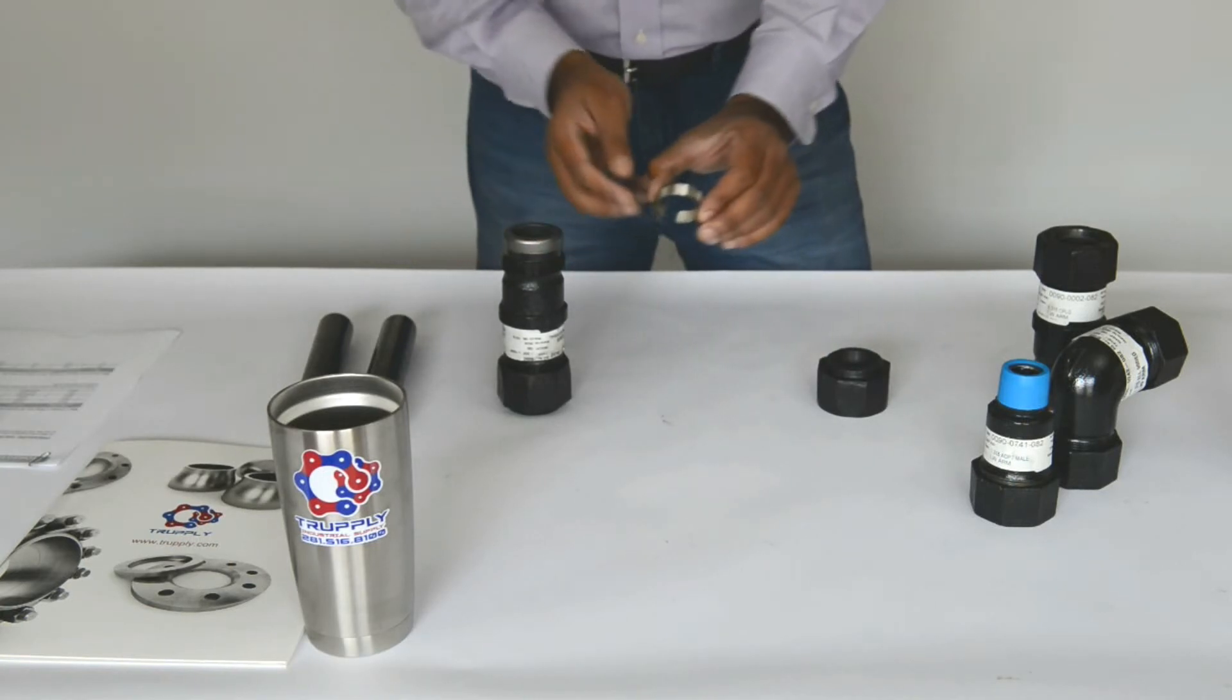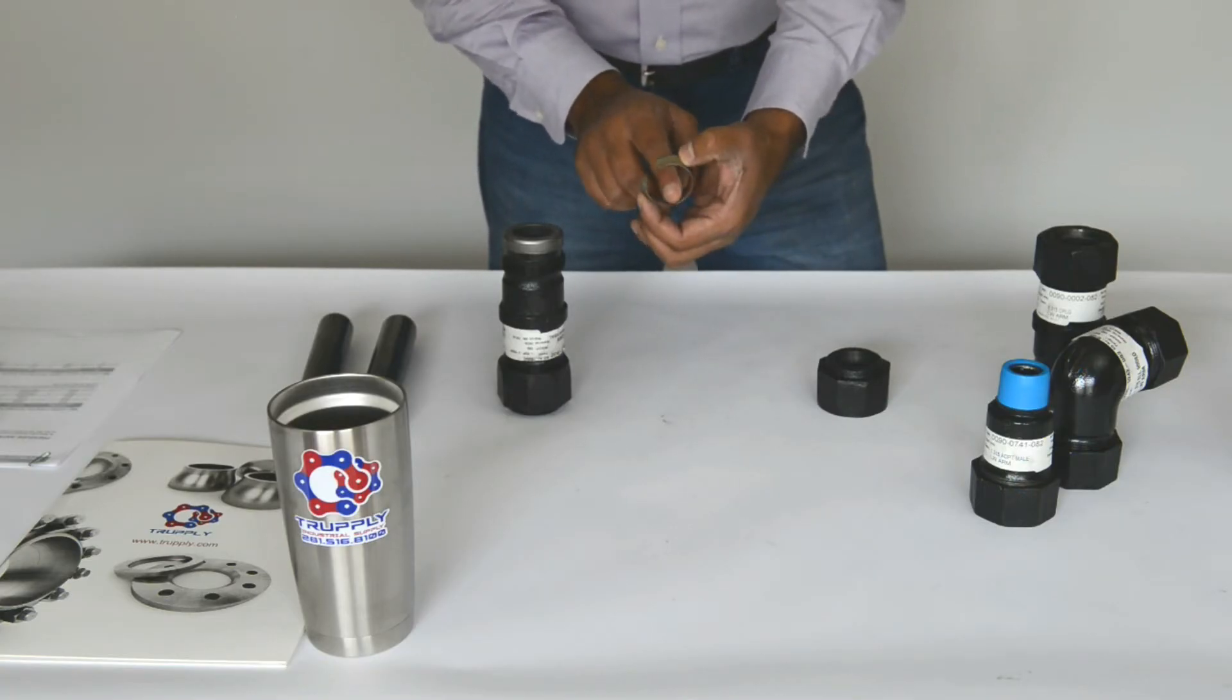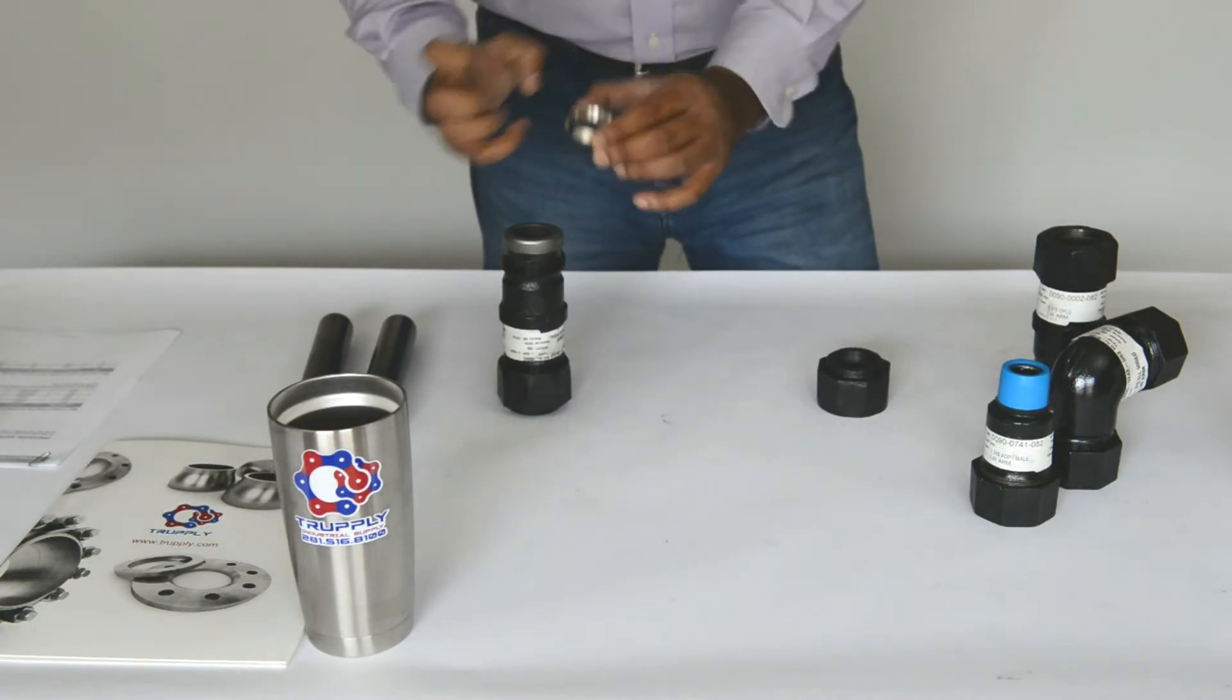Once you tighten it up, the ring closes and there are teeth, there are jaws right here that will grip on the pipe and prevent it from pulling out.